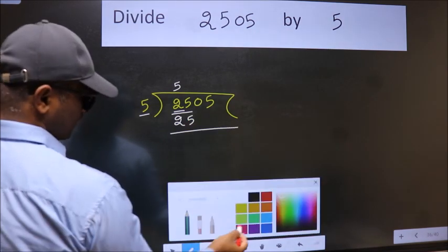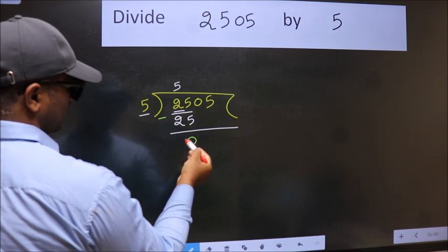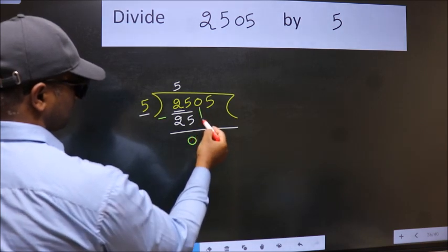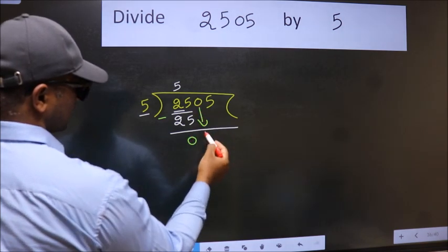Now we should subtract. We get 0. After this, bring down the beside number. So, 0 down.